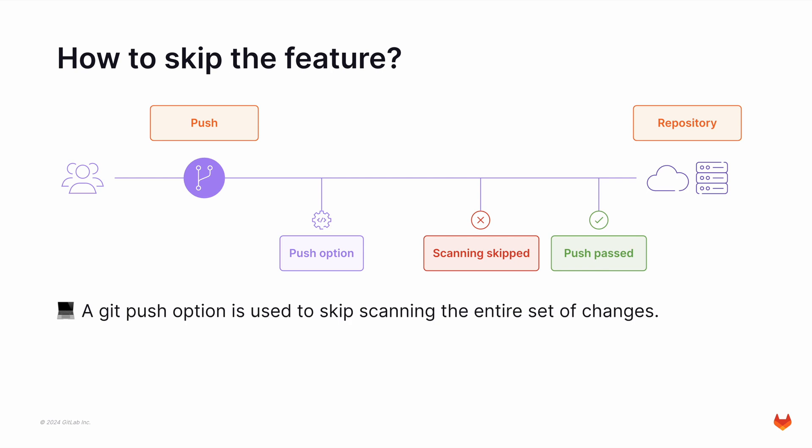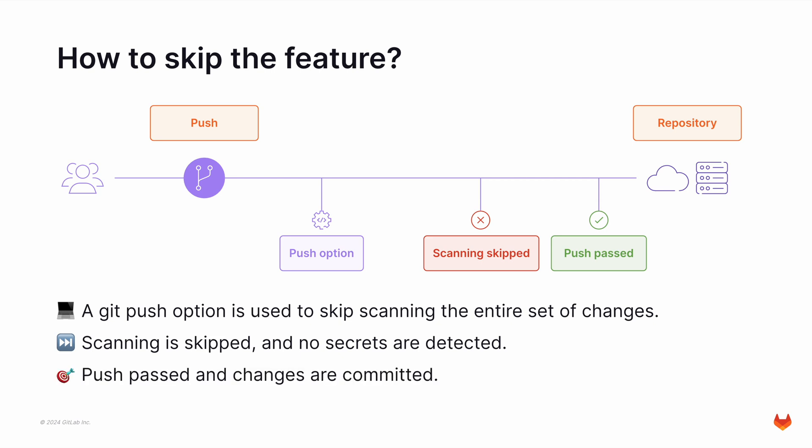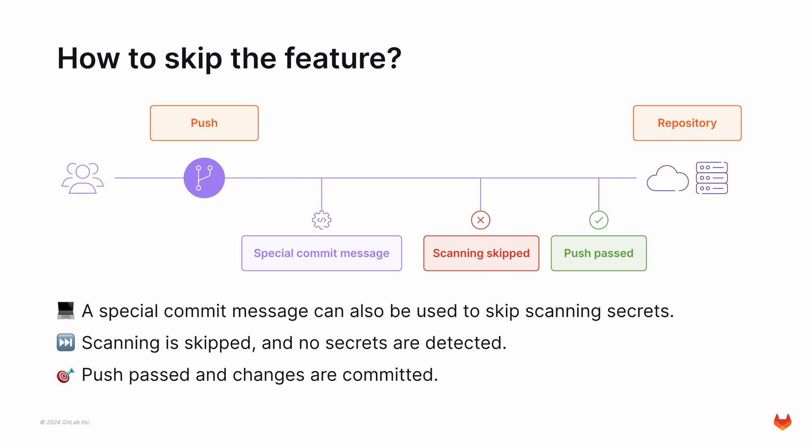This push option was used to skip scanning the entire set of changes. When scanning is skipped, no secrets will be detected. The push passes and the changes are committed to the repository. There is also an option to use a special commit message in cases where using the git push option would not be possible — for example, in workflows like the web IDE or in other graphical user interfaces.